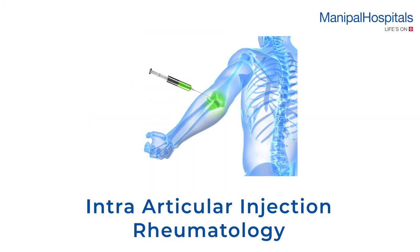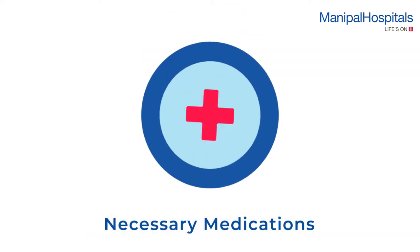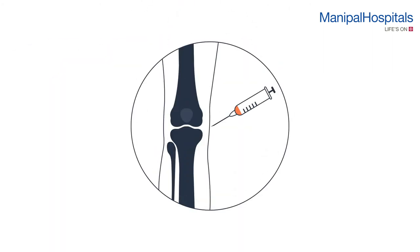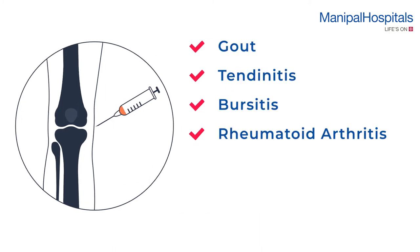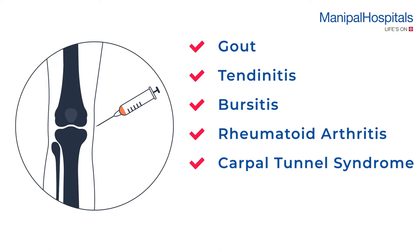An intra-articular injection is a procedure where the affected joint is injected with a hypodermic needle, through which the necessary medications are given. It is used to treat conditions like gout, tendinitis, bursitis, rheumatoid arthritis, carpal tunnel syndrome, and psoriatic arthritis.